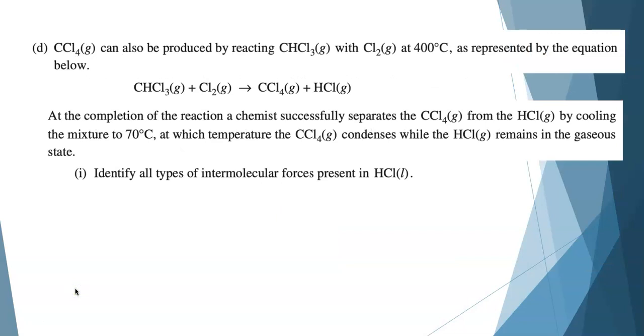We're going to switch gears a little bit. We can also make carbon tetrachloride by reacting trichloromethane with chlorine gas, where the other product is hydrogen chloride gas. We've got this balanced equation. At the completion of the reaction, a chemist successfully separates the two products by cooling the mixture to 70 degrees. At this temperature, carbon tetrachloride condenses, but the HCl does not.